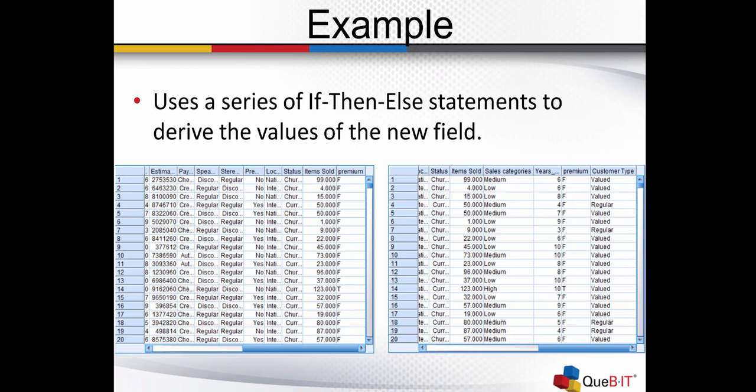We see what our data looked like originally on the left. The table on the right has a new field, customer type, that was created based on a collection of if-then statements that determined if the customer was a premium customer and the number of years we had that person as a customer. If they met certain criteria — either number of years as a customer or whether they were a premium customer — they were classified as a valued customer. Otherwise, they were classified as a regular customer.